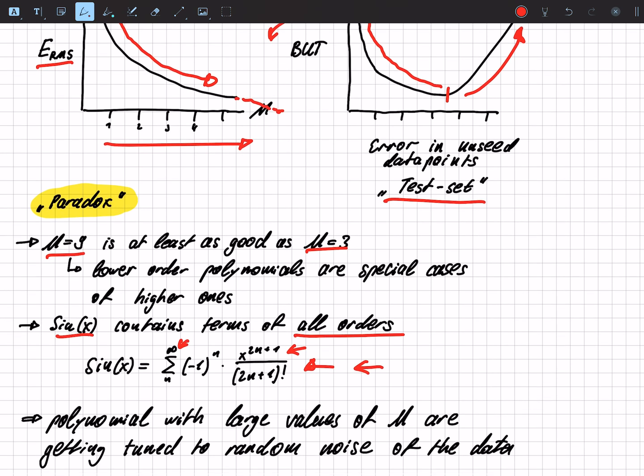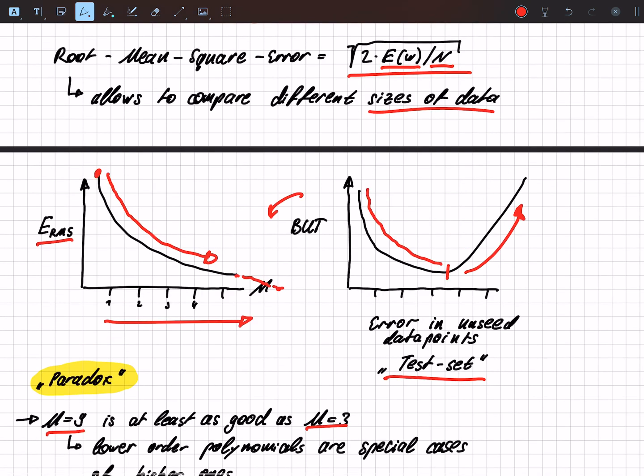The polynomials with those large values are getting tuned to the random noise of the data. If we increase the number of parameters that we can tune and also increase the degree of the polynomial, we will learn the randomness of the data.